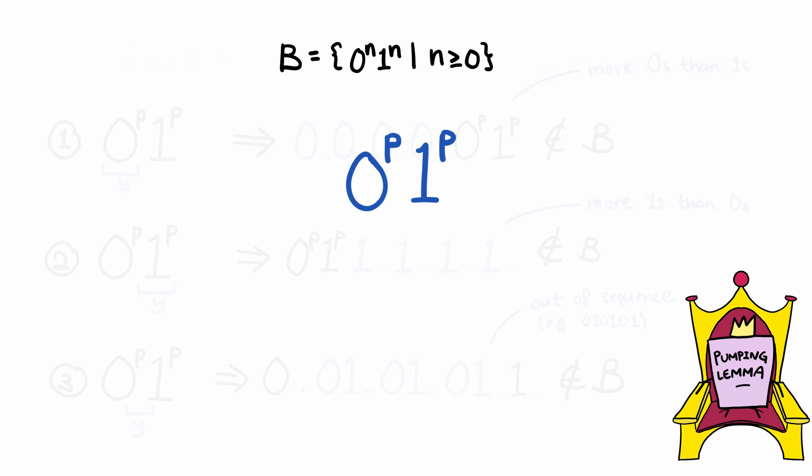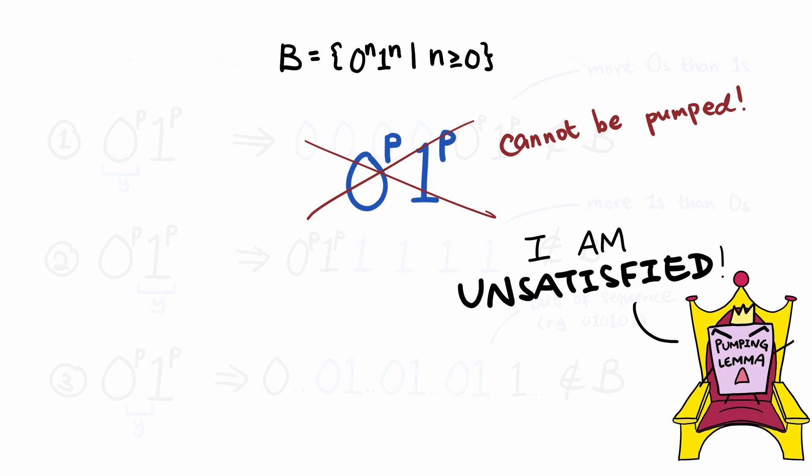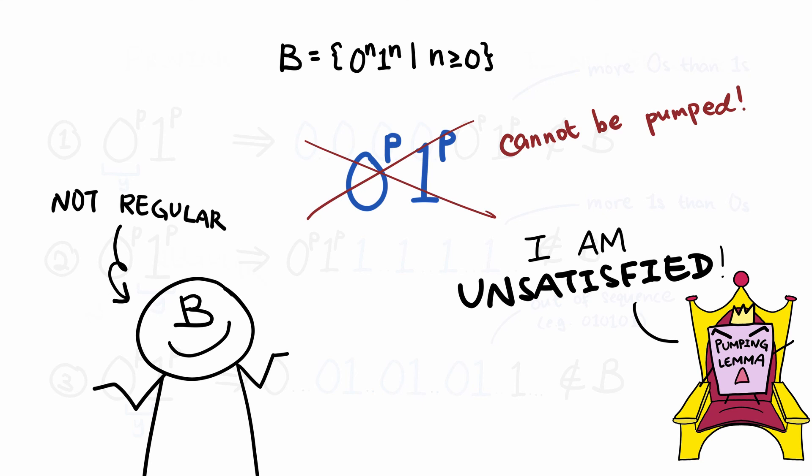Therefore, this string that belongs in the language cannot actually be pumped. And as long as there is one string that is at least length p that cannot be pumped, such as this one, then the language does not in fact satisfy the pumping lemma, and therefore is not regular.